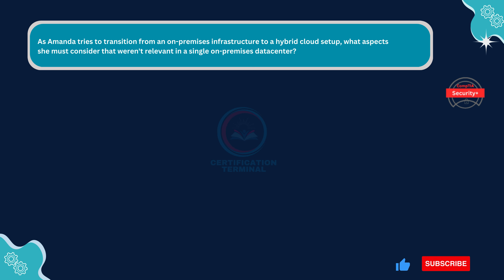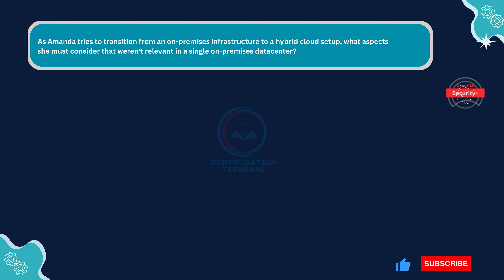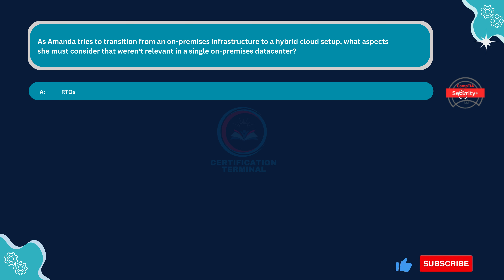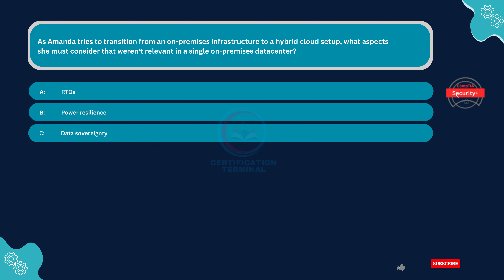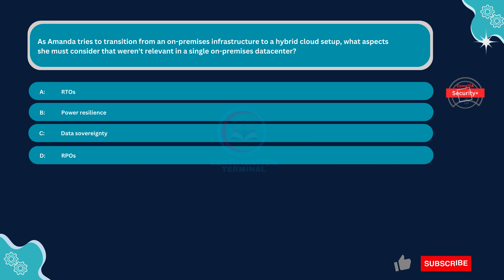Next question. As Amanda tries to transition from an on-premises infrastructure to a hybrid cloud setup, what aspects must she consider that weren't relevant in a single on-premises data center? Option A, RTOs. Option B, Power Resilience. Option C, Data Sovereignty. Option D, RPOs.